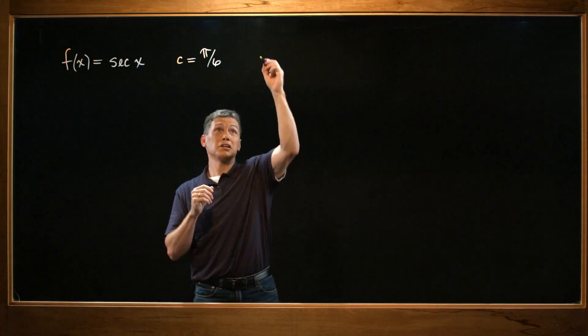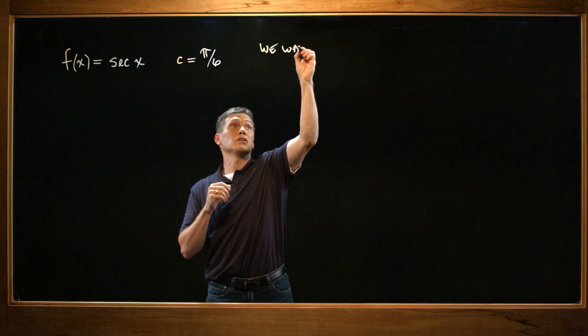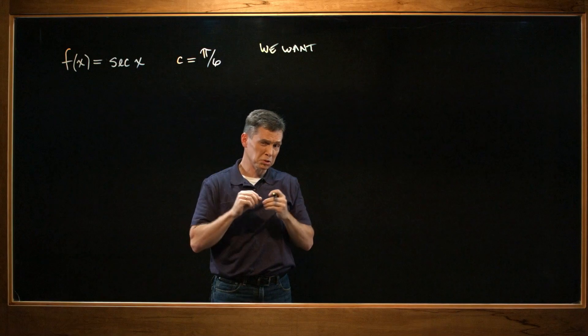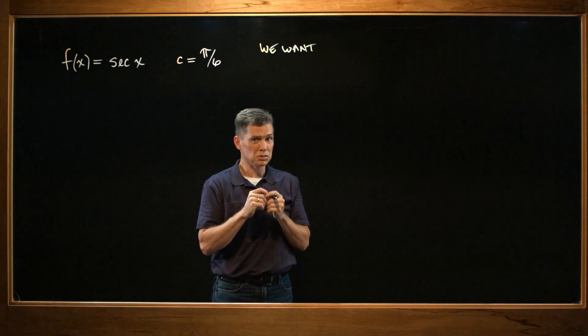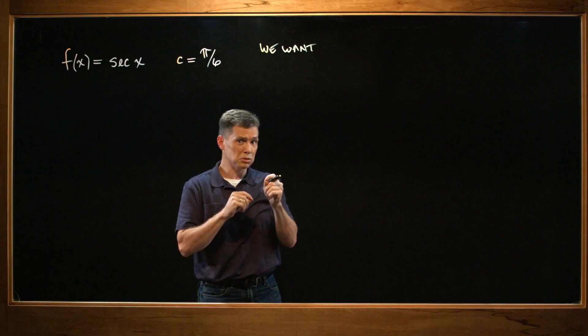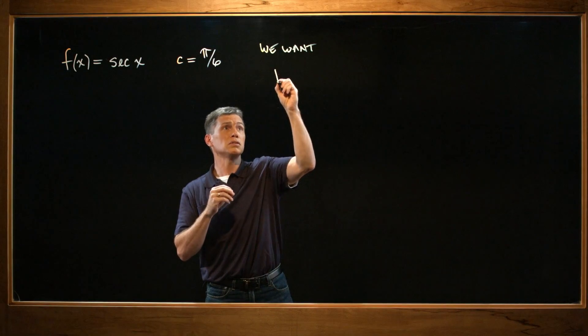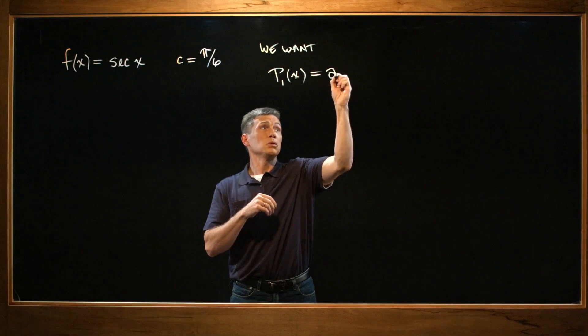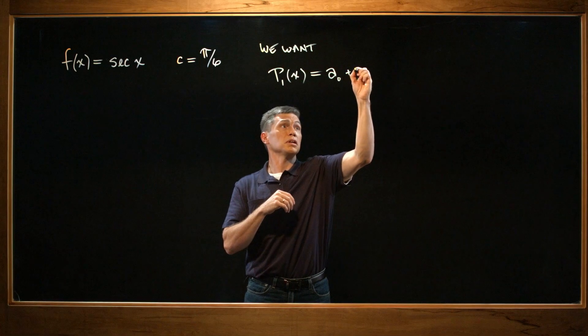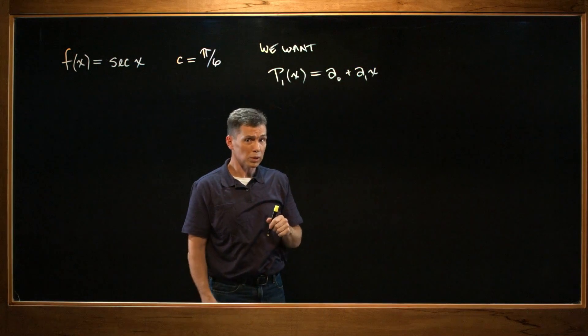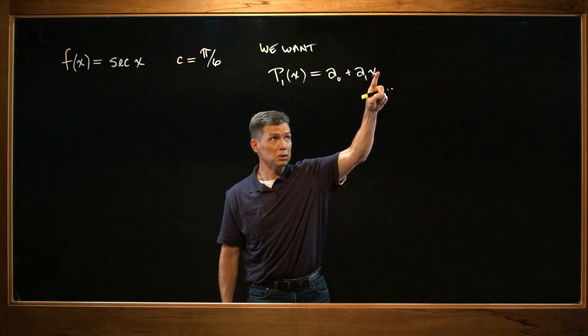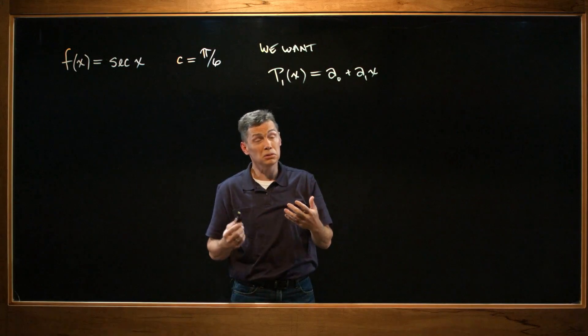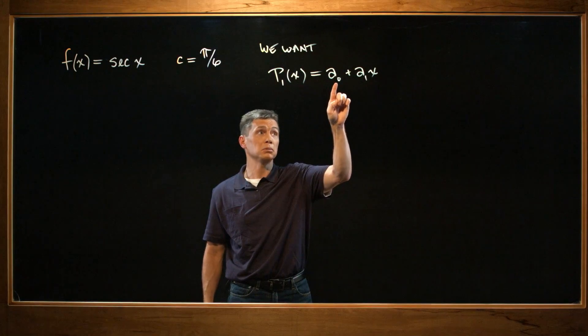So let's start with the first thing they ask us to come up with is a first degree polynomial. And then they tell us a couple conditions that the value and the slopes are supposed to be the same between the two functions. So if we're supposed to come up with a first degree polynomial, I'll suggest that what we want is, let's call it P₁. I think they even tell us to call it P₁. What we want is a₀ + a₁x.